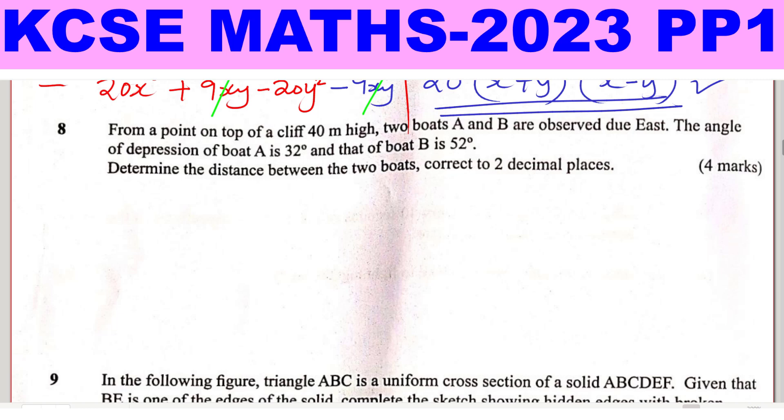It is very important to sketch these so that you can be able to solve it easily. So I'll begin by sketching. From a point on top of a cliff 40 meters high, two boats A and B are observed due east. Let me start by drawing the cliff. This is the cliff, then this is the horizontal ground here.